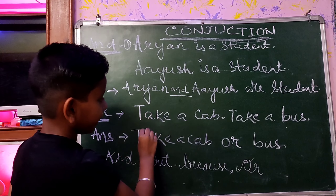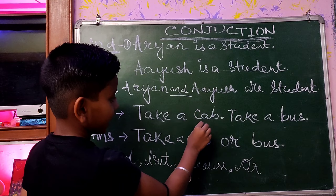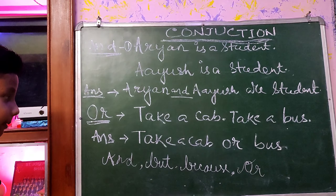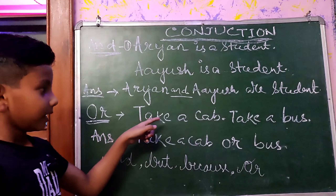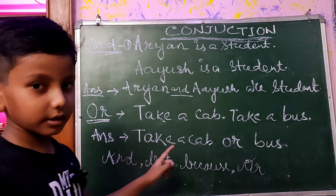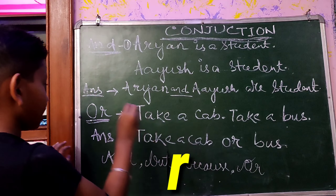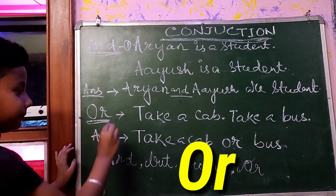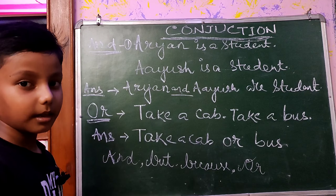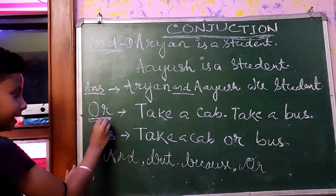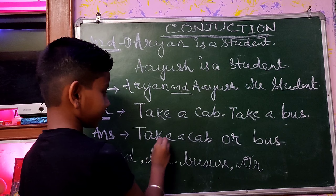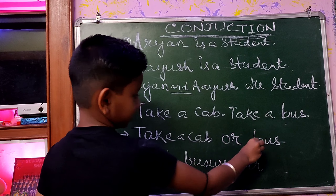Or: 'Take a cab. Take a bus.' So friends, to join these sentences, we use the conjunction word OR. And the sentence that comes after adding OR is: 'Take a cab or bus.'